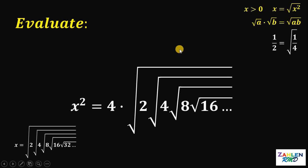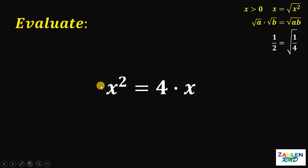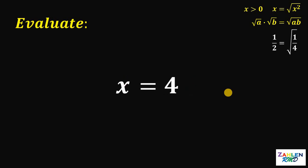Therefore, the expression on the right-hand side is just x. So we have x squared equals 4 times x. Now we know that x is not equal to 0, so we can divide both sides by x, canceling one x on each side. Therefore, x equals 4.